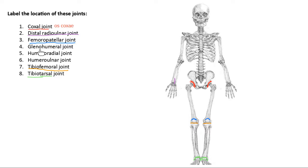The glenohumeral joint is in the shoulder. Its name comes from a bone marking called the glenoid cavity — the large indentation on the scapula where the humerus fits inside. So the glenoid cavity is the indentation on the scapula where the humerus goes in, making the glenohumeral joint up at the shoulder.